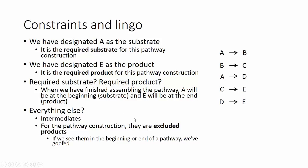We talk required substrate, required product. Why are they called this? Essentially, when we have finished assembling the pathway, we'll have A at the beginning and E at the end. So A will be our de facto substrate, our required substrate. And E will be our de facto product or our required product.